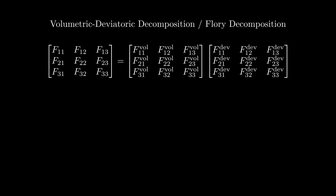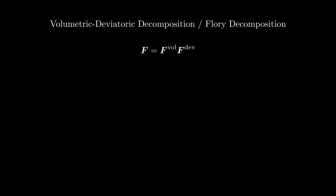Let's start with the volumetric-deviatoric decomposition, which is also known as the Flory decomposition. The deformation gradient tells us how matter is changing in volume and how it is changing in shape. We can ask: how much of the deformation gradient contributes to a change in volume, and how much to a change in shape? The volumetric-deviatoric decomposition answers this question. Specifically, the deformation gradient F can be decomposed into two matrices: the volumetric contribution F_vol and the deviatoric contribution F_def.